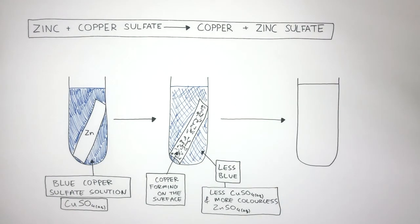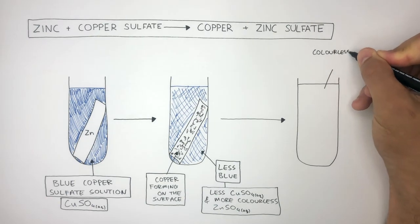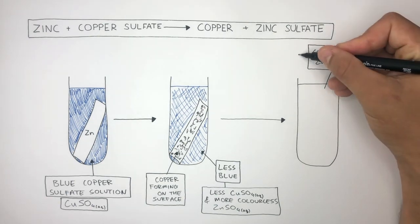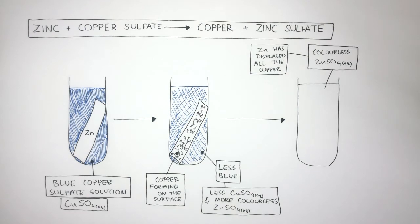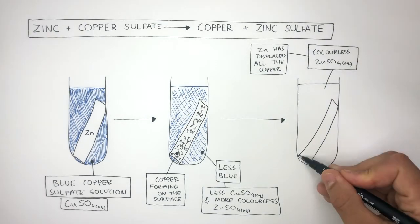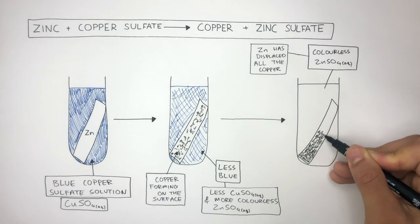Once the reaction is complete, we're left with colorless zinc sulfate solution because the zinc has displaced all the copper, forming 100% zinc sulfate solution, which is colorless. There is no more blue copper sulfate solution, and the zinc is now coated with copper on its surface.